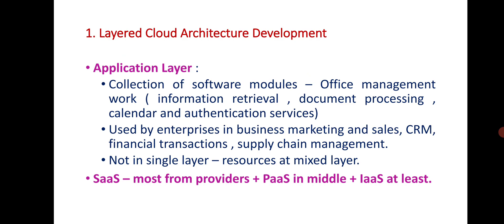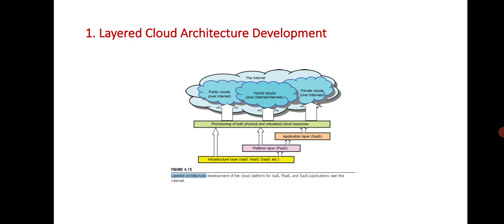It has many layers — resources at mixed layers. Software as a service is the top layer from providers, platform as a service is in the middle, and infrastructure as a service is the last. Now you can see the development of cloud platforms for infrastructure, platform, and software over the internet. There are three types of clouds available: public, hybrid, and private.